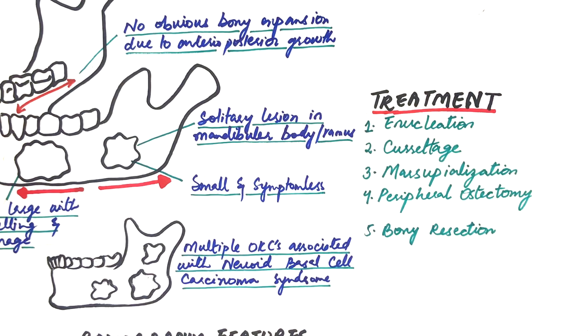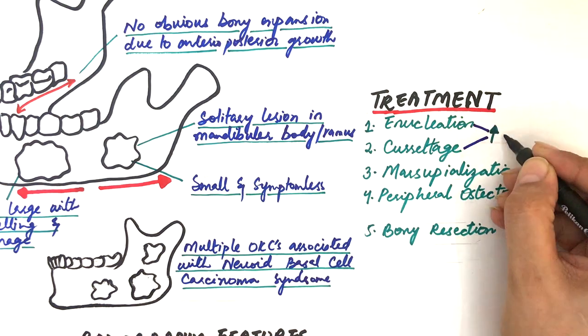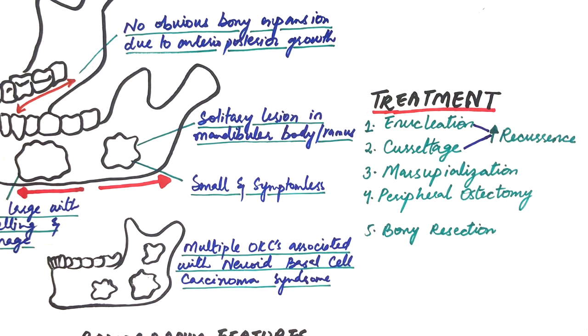Since one of the main problems with OKCs is their recurrence once formed throughout life, this recurrence is because the cyst has an extremely thin and friable fibrous wall, making it difficult to enucleate in one piece from its bony cavity. Researchers prove that this high recurrence rate is observed mostly after enucleation and curettage of the cyst.